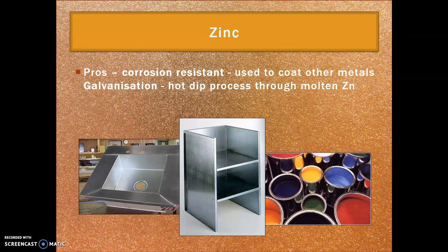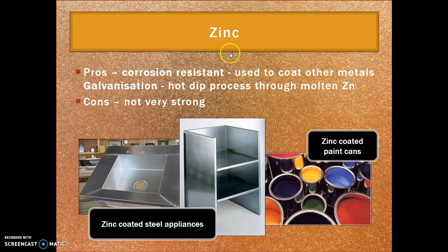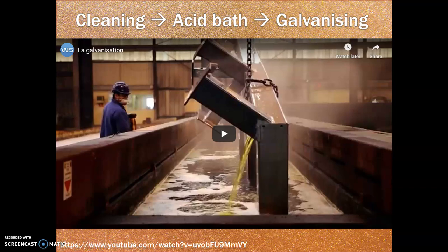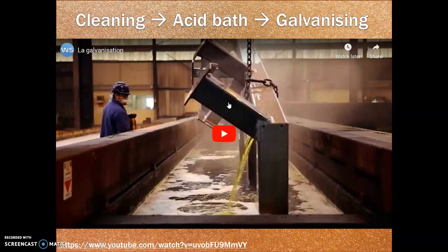Zinc is very similar to tin — both are incredibly corrosion resistant and used to coat other metals. Zinc is used more commonly in a process called galvanization, which is a hot-dip process through a bath of molten zinc. It's very cool but not very strong on its own without the coating. Pretty much all the appliances in your kitchen will be zinc-coated or galvanized. There's a great video showing a huge steel girder for a football stadium being cleaned, put through an acid bath to remove oxidation, then dipped in a galvanizing bath — very satisfying to watch.